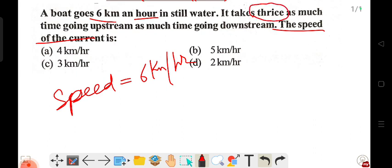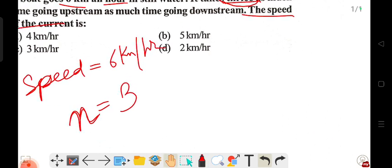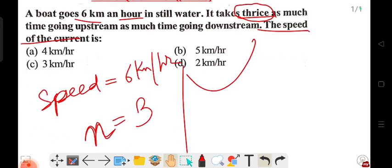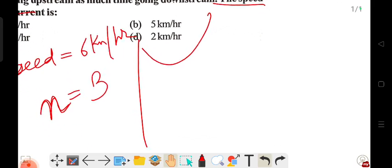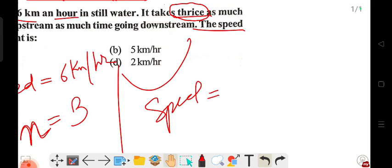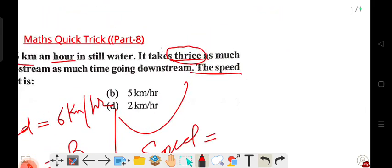It takes twice as much time going one way. The time ratio is 1:2 or 2:1 depending on direction. The formula for current speed when we have this ratio is: speed of current equals still water speed times a specific factor.